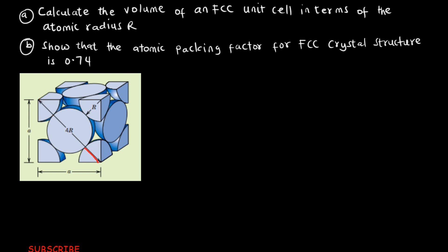We're adding the two radii and the diameter of the center half-sphere, giving 4R for the diagonal. Now we have to determine the volume of the unit cell. Since the unit cell is cubic, the volume will be A cubed. The sides are all equal to A, so volume = A³. But we need to express the volume in terms of atomic radius R, so we must find an expression for A.